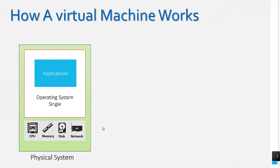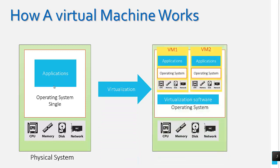Now let's see how a virtual machine works. In the diagram you see a physical system which has CPU, memory, disk, and network. It contains a single operating system and applications — this is before virtualization. The second diagram shows a system with virtualization software. Here the CPU, memory, disk, and network resources are the same, but we have used virtualization software which creates two virtual machines by sharing the resources of the physical system.